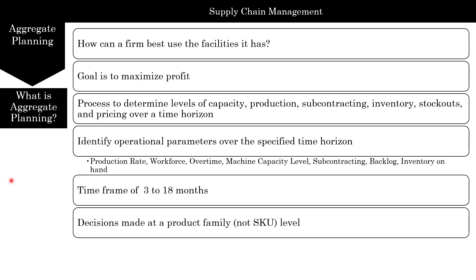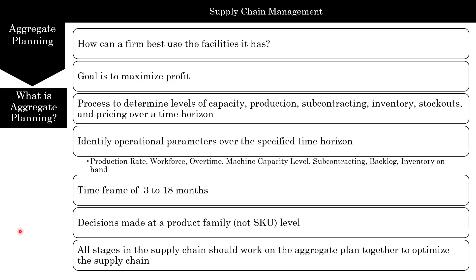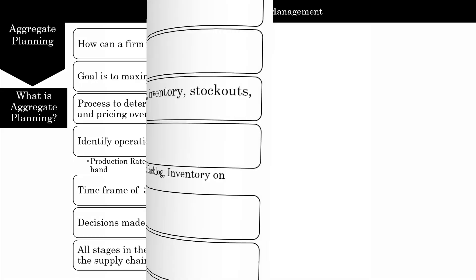The decisions made with aggregate planning are aggregated — that is, grouped together. It's not at an SKU or stock keeping unit level, but at a product family level. All stages in the supply chain should work on the aggregate plan together to optimize the supply chain.